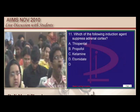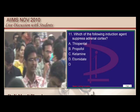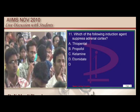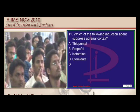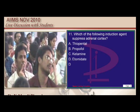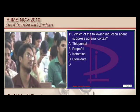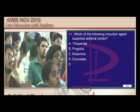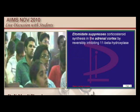Etomidate is a very traditional question in the entrance exam — it is the one which leads to development of adrenocortical suppression. There is no surprise about this question.